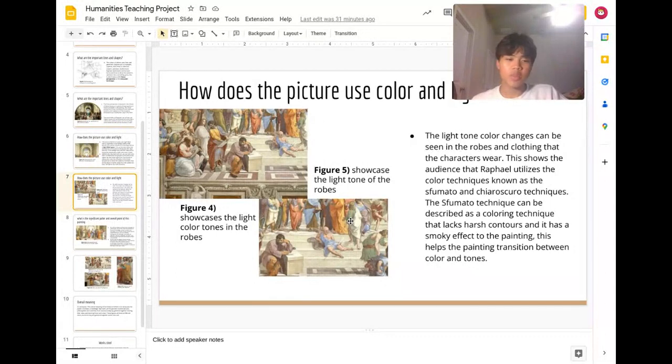The light tone color changes can be seen in the robes and clothing that the characters wear, shown in Figures 4 and 5. This shows that Raphael utilizes color techniques also known as sfumato and chiaroscuro. The sfumato technique can be described as a coloring technique that lacks harsh contours and has a smoky effect on the painting, helping transition between colors and tones.